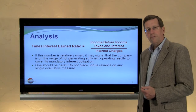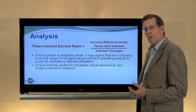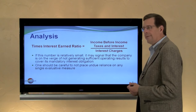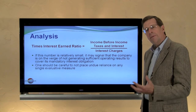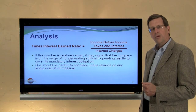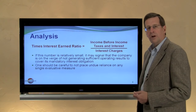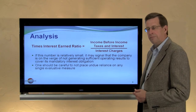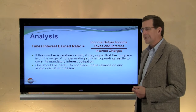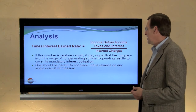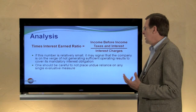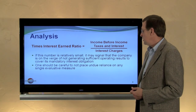Another related ratio is times interest earned. Here we take income before interest and taxes and divide it by the interest charges. This shows how many times a company is able to cover its interest cost. If it's not able to cover interest cost, it can default on its debt and lose the ability to continue to operate. A relatively small number could signal the company is on the verge of not generating sufficient cash flows to cover its mandatory interest obligations.